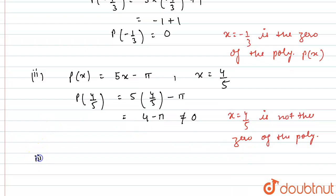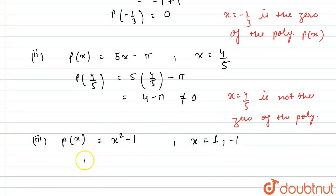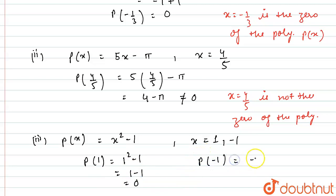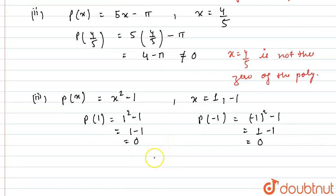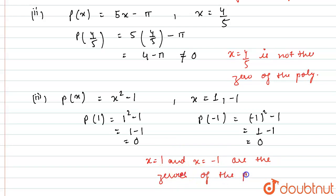In the third part, we are given the polynomial p(x) = x² - 1 and we need to check this at x = 1 and x = -1. p(1) = 1² - 1 = 1 - 1 = 0. Similarly, p(-1) = (-1)² - 1 = 1 - 1 = 0. So x = 1 and x = -1 are both zeros of the polynomial p(x).